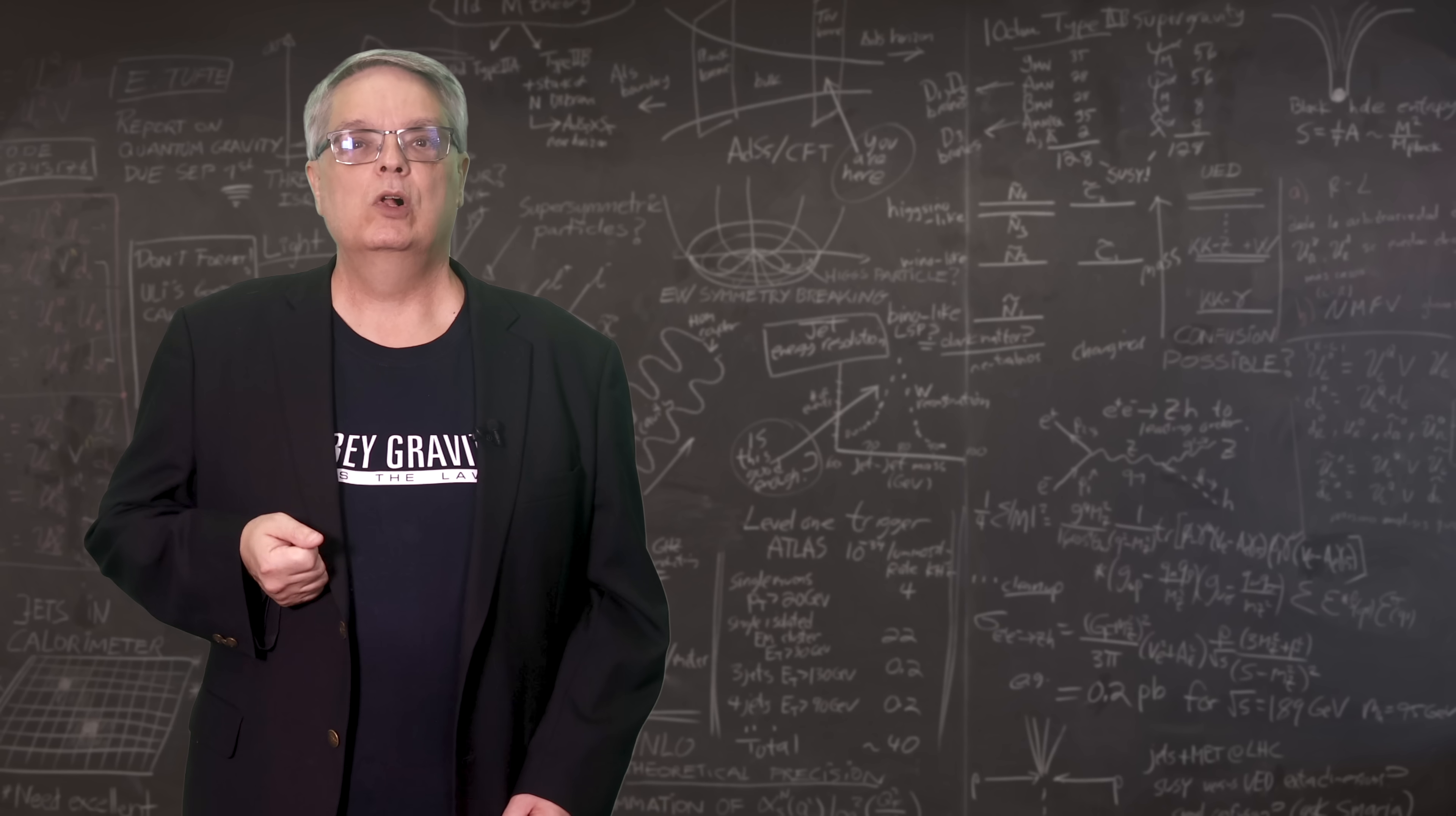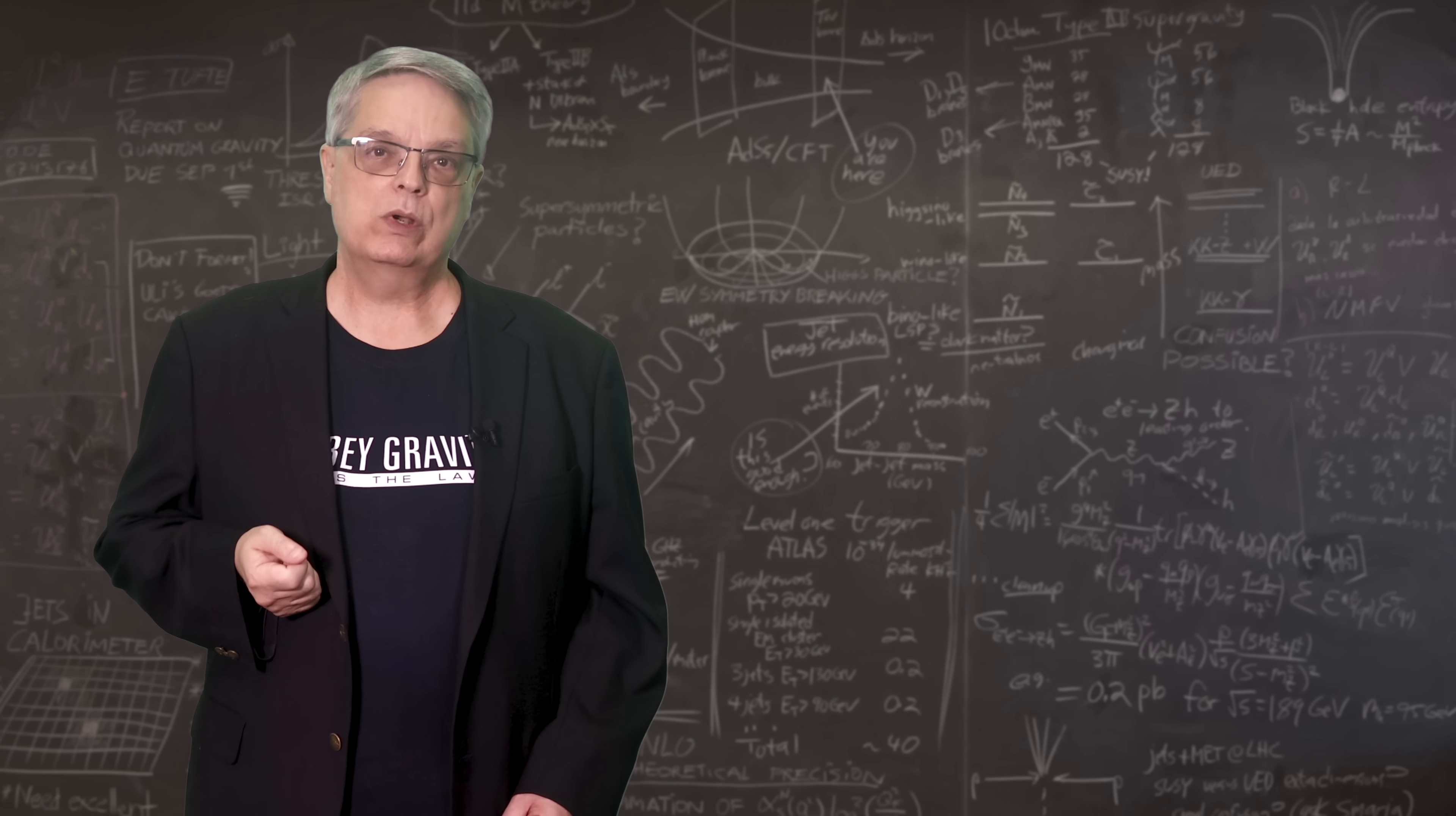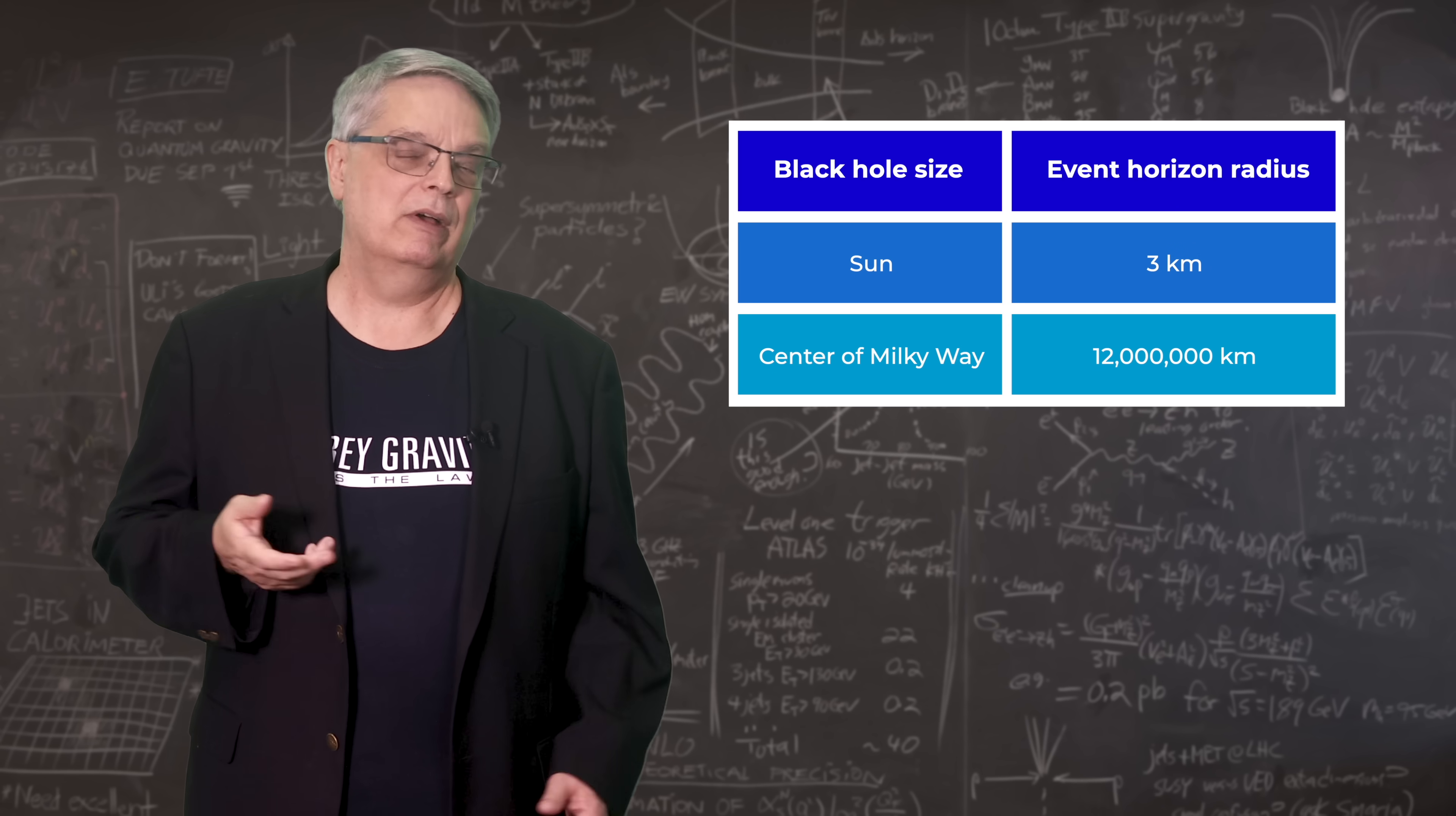Well, a black hole with a mass of the size of the one at the center of the Milky Way has a much bigger event horizon than around an ordinary star. Remember that the event horizon around a star with the mass of the Sun has a radius of about three kilometers.